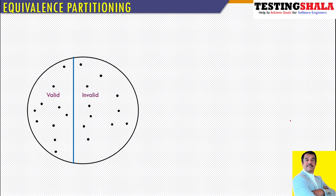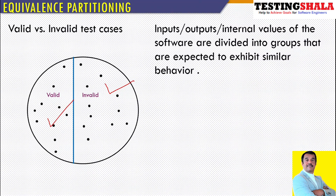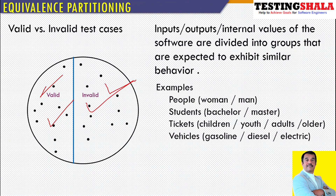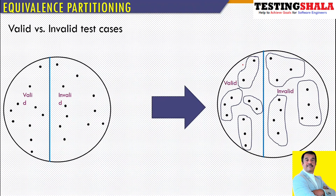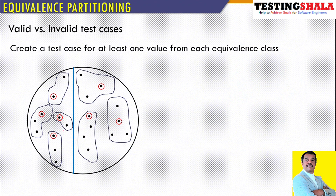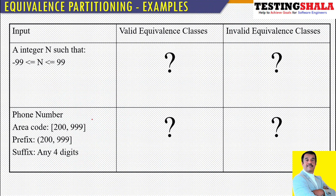An equivalence class represents a set of valid or invalid states for an input condition. With many valid cases and many invalid cases, we cannot execute all of them. So we group them further and pick only one item from each group — shown by the red circle. Instead of executing hundreds of test cases, we may execute only five to ten cases from each equivalence class.